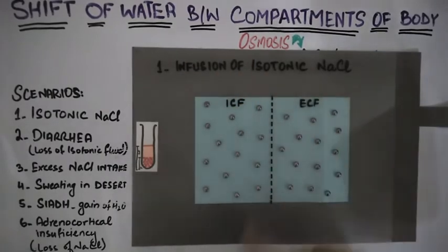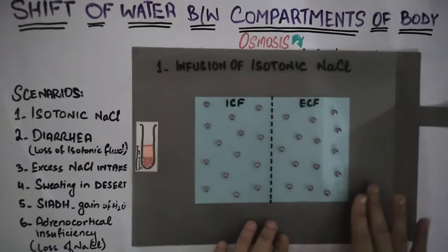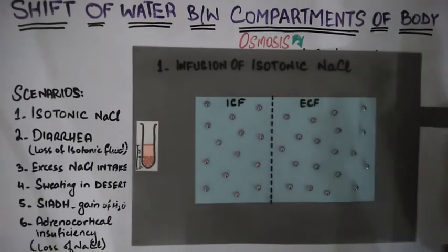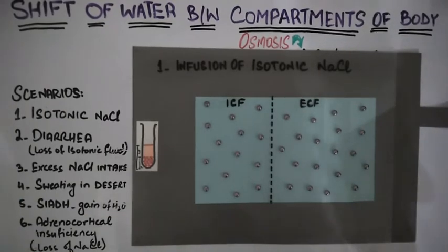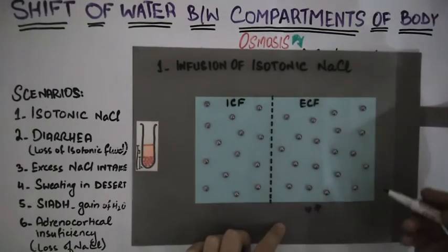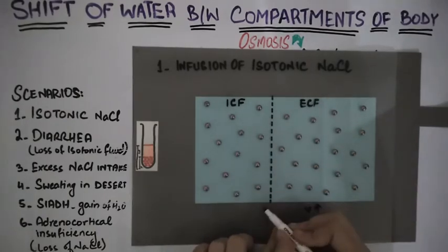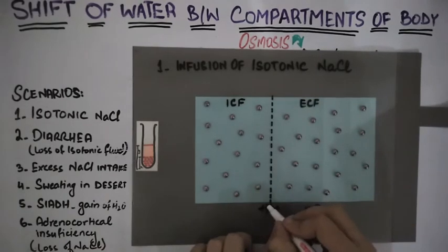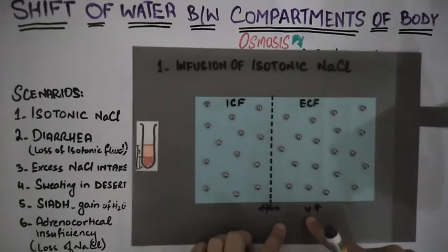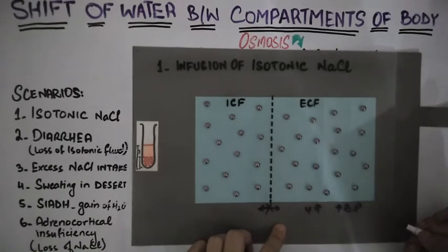The first scenario is infusion of isotonic sodium chloride — normal saline, which is 0.9% sodium chloride solution. This iso-osmotic fluid is added to the extracellular fluid, so the volume of ECF increases but osmolarity does not change. Therefore there is no net shift of water between ECF and ICF. The increased volume leads to increased blood pressure, as the increased volume in the arteries exerts greater pressure on vessel walls.